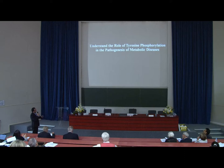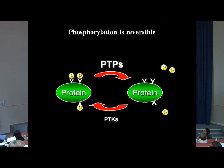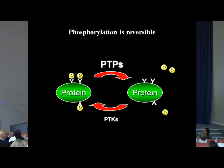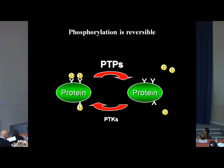Tyrosine phosphorylation is very important for regulation of signaling. It is at least partly reversible, so it's under the control of two key players. The protein tyrosine kinases act to phosphorylate the target protein, and for the most part this leads to activation of the protein. On the other hand, the protein tyrosine phosphatases work to dephosphorylate the target protein and for the most part lead to its inactivation. This balance between kinases and phosphatases is very important for regulation of cellular homeostasis, and when disrupted it leads to pathogenesis of disease.